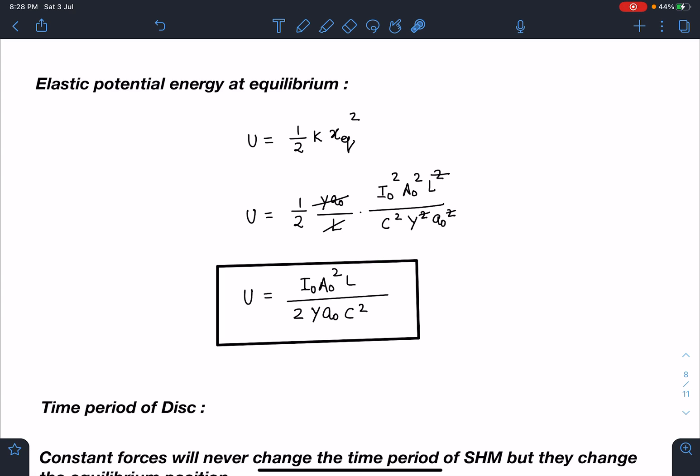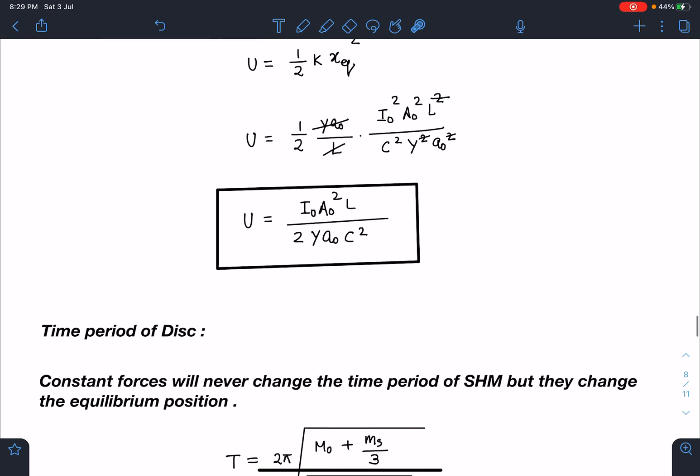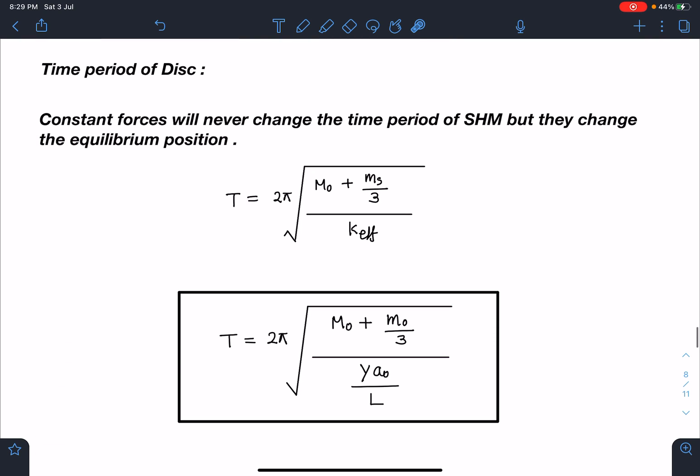After this we can see elastic potential energy at equilibrium. I can directly use the formula potential energy-wise. I'm using linear variation, so here it will exactly behave like spring: (1/2)K·x_equilibrium². When I substitute the value of x_equilibrium, I am going to get this answer: I₀²A₀²L/(2YA₀c²). This is going to be the answer for elastic potential energy.